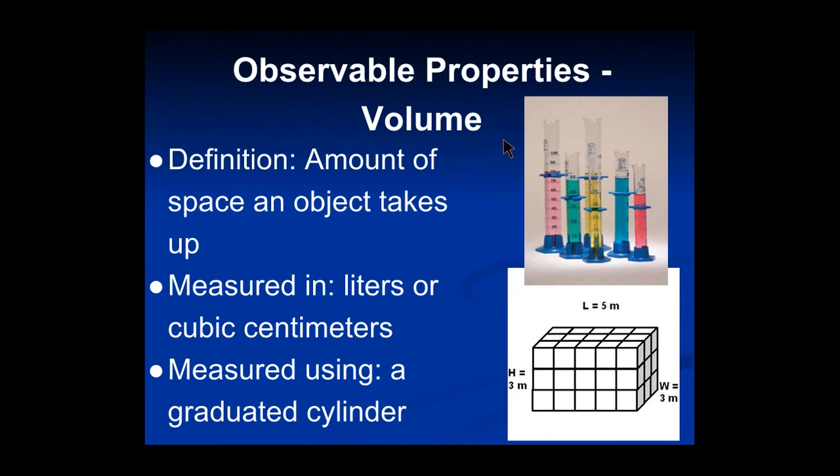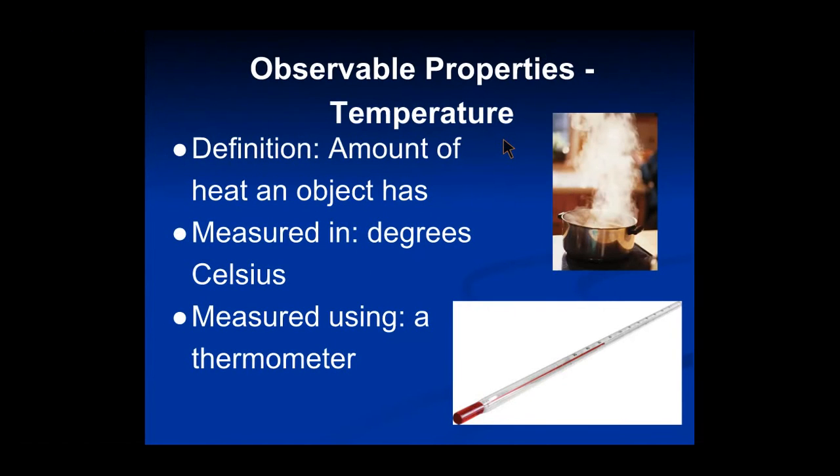Next one is one we've all seen before. We are going to look at the property of temperature. Temperature is the amount of heat an object has. Something on the stove will have a higher temperature than something in the freezer. This is because the object has more heat on it when it's on the stove. When we talk about temperature, we describe it in degrees Celsius.